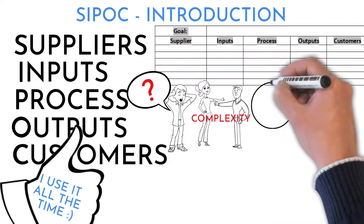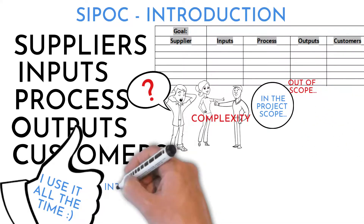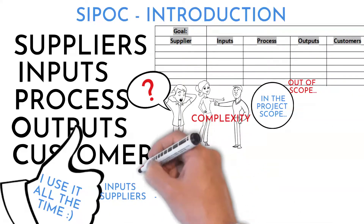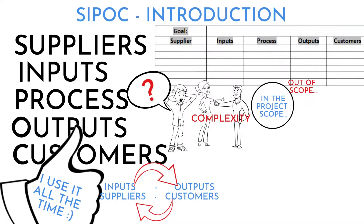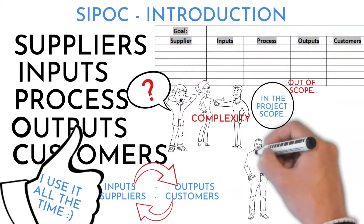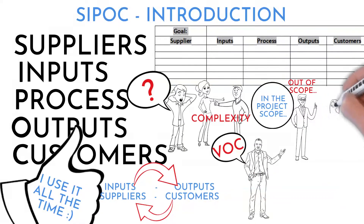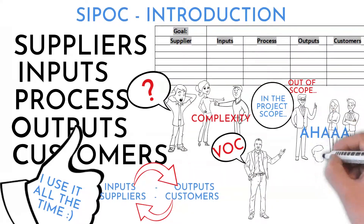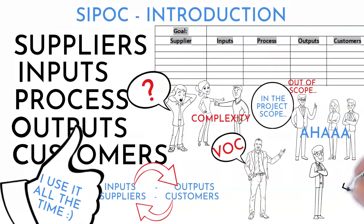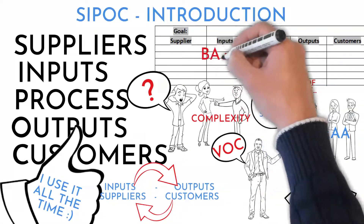It describes high-level process steps within project scope boundaries, visualizes correlations between inputs and outputs from suppliers to customers, identifies key customers to include in a voice of customer initiative, encourages the team in first high-level discussions about challenges to be resolved, helps to understand who the right stakeholders are to deliver project results, and serves as a baseline for process mapping.